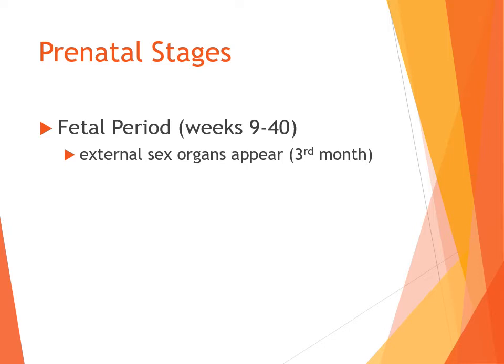Continuing with the fetal period: external sex organs — either a vagina or a penis — appear around the third month, when people typically find out the sex of their child. Regarding the age of viability, with the current state of medicine, 23 weeks is the youngest that babies can be born and have a chance at survival. The later a child is born, closer to full term, the better chance they have.